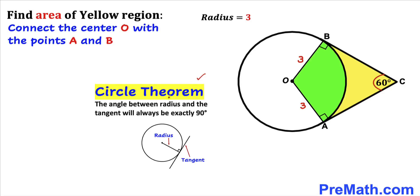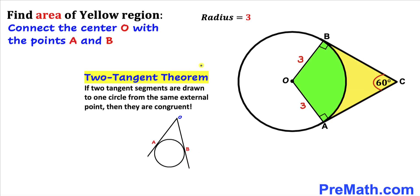Let's recall the circle theorem. According to this theorem, the angle between the radius and the tangent will always be 90 degrees. Therefore, the angles at A and B are both 90 degrees, since these are the radii and these are our tangent lines. Now let's recall the two tangent theorem.